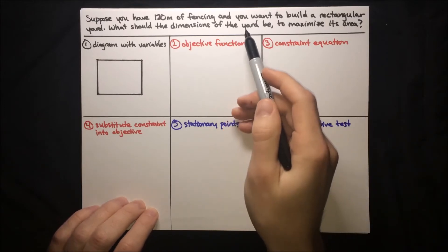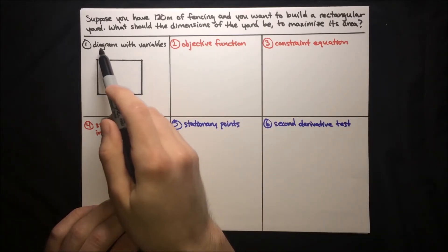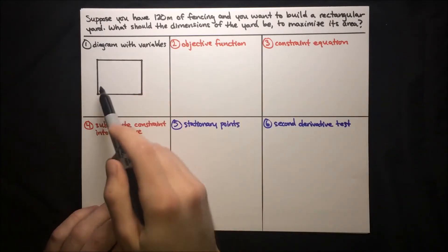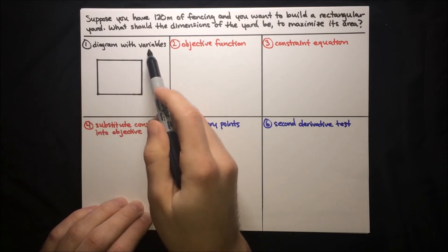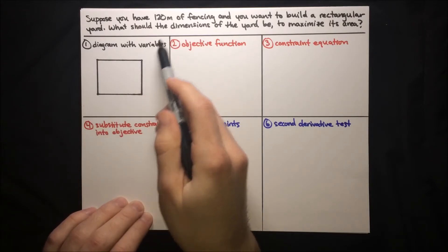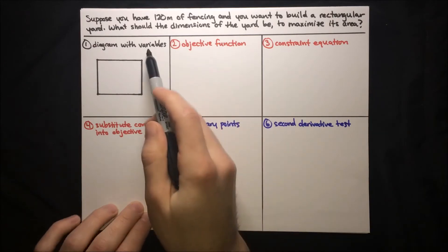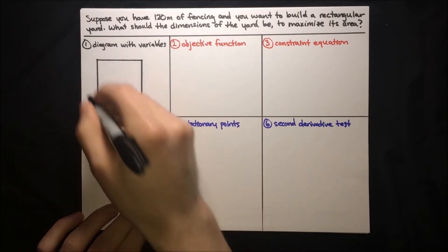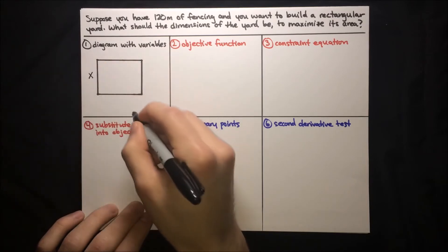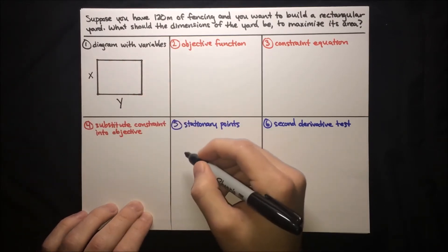To answer this question, we're going to start off by drawing a diagram. So we've got a rectangular yard, so we make a rectangular diagram. Now let's assign variables that reflect what we want to find. We want to find the dimensions of the yard, so let's assign one variable for each dimension. X can be the vertical dimension and y can be the horizontal dimension.